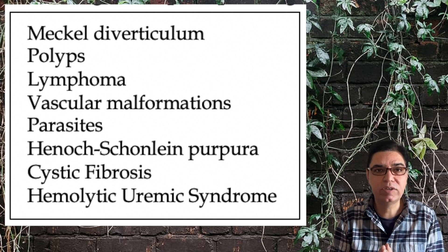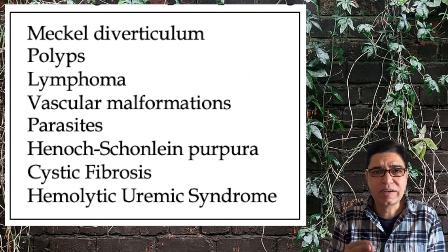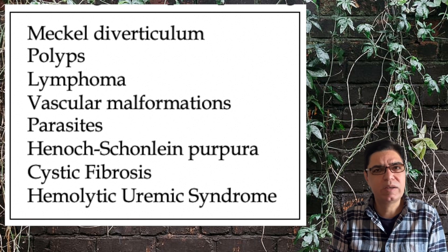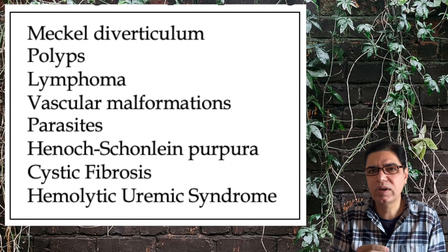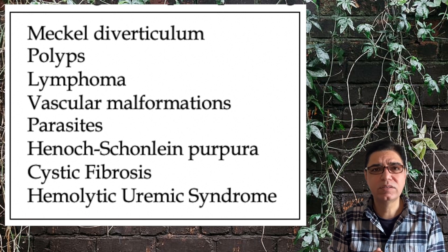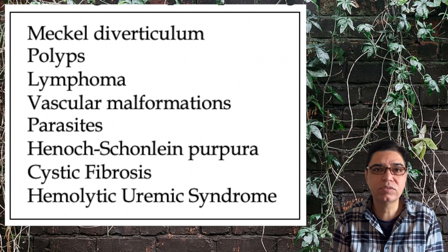There is a table displaying some uncommon conditions potentially associated with intussusception. Meckel's diverticulum, which is a small pouch occurring in 2% of the population, can sometimes become a lead point. Polyps — small benign growths in the lumen of the intestines — can act as a lead point. Intestinal lymphomas, vascular malformation, and angiodysplasia can also cause it.